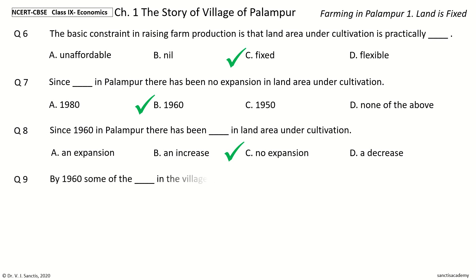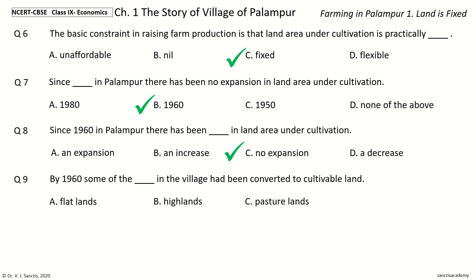Question 9: By 1960, some of the Dash in the Village had been converted to Cultivable Land. The options are Flatlands, Highlands, Pasturelands, Wastelands. Your time to choose. And the answer is Wastelands. So, by 1960, some of the Wastelands in the Village had been converted to Cultivable Land.